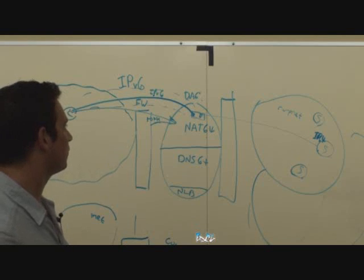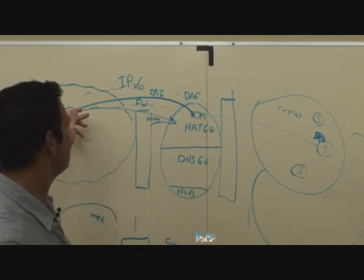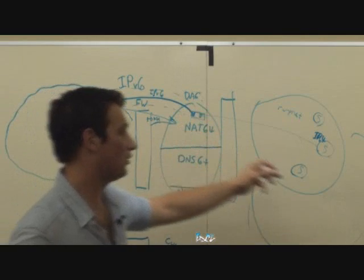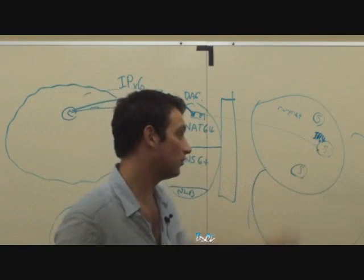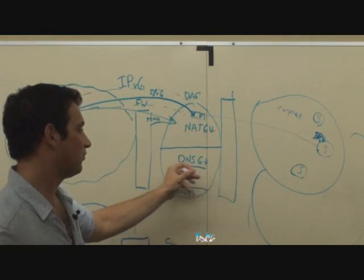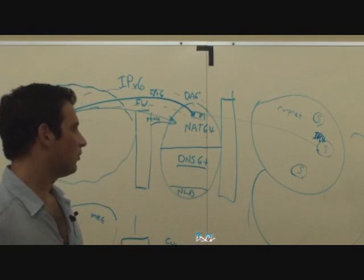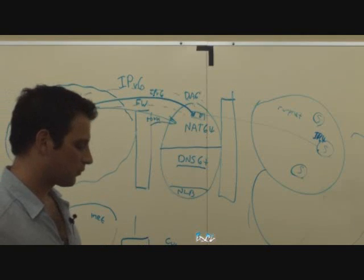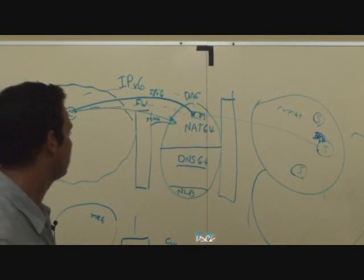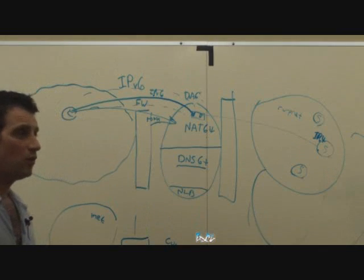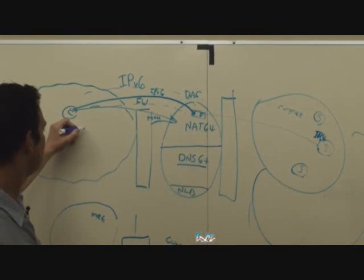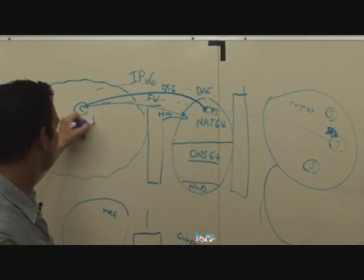We sort of fooled the client into connecting to this endpoint, to our socket, and not to the real server. We do that by using the DNS624. So I'll just walk through the steps of what actually happens when the client wants to connect. Suppose the client wants to connect to a site, let's call it HR web.